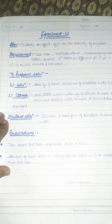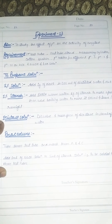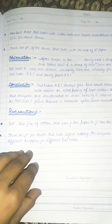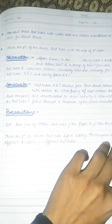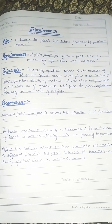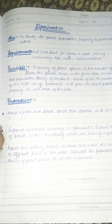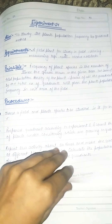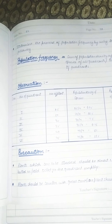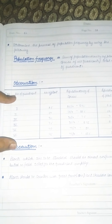Experiment 13 is to study the effect of pH on the activity of enzymes, with an observation and precaution section. Experiment 14 is to study the plant population frequency — here is a simple process diagram, observation, and precaution.